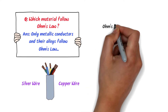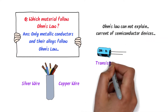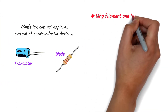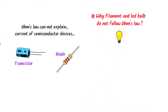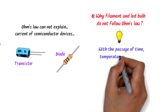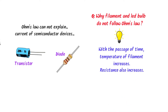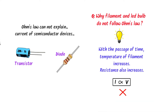Remember that Ohm's Law cannot explain the behavior of current in semiconductor devices, diodes, and transistors. As a bonus question: why do filament bulbs or LEDs not follow Ohm's Law? It is because with the passage of time, the temperature of the filament increases, due to which resistance also increases. Hence, the physical conditions no longer remain the same, and therefore current is not directly proportional to potential difference. So filament bulbs and LED bulbs do not follow Ohm's Law.